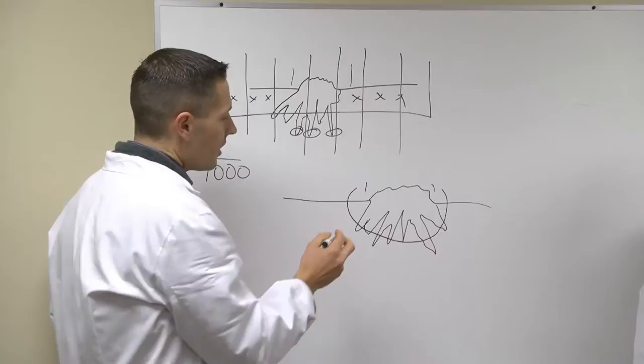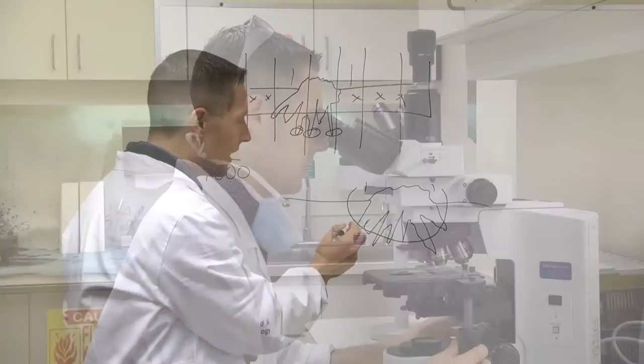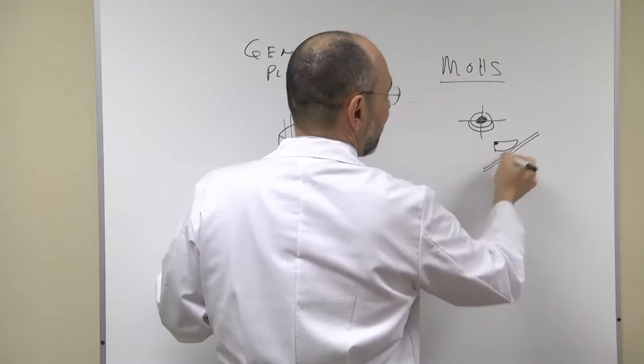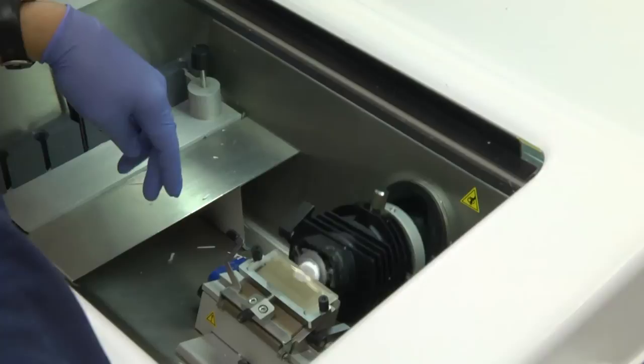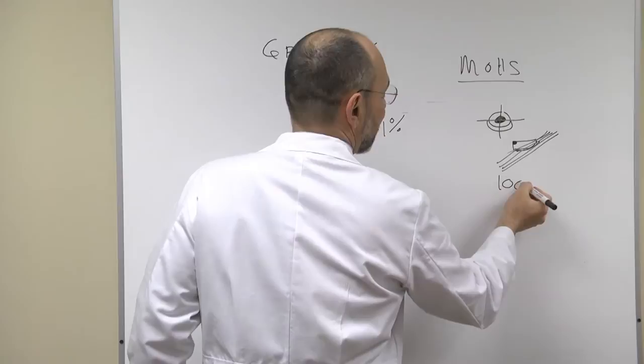What we'll do then is take that piece, go to the lab, and while you wait for about 30 minutes, we'll take it and analyze it underneath the microscope. We section it in our own lab like this, so we are able to examine the lateral margin and the deep margin at the same time on the same microscope slide. Using this technique, virtually 100% of the margin is examined for the persistence of skin cancer.